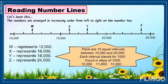This slide now shows reading number lines. Numbers are arranged in increasing order from left to right on the number line. We have on this number line: 10,000, 15,000, 20,000, and 25,000. There are also letters placed on the number line.